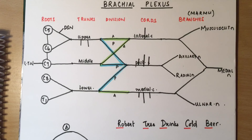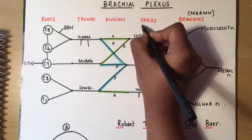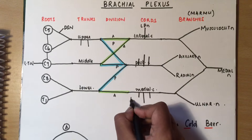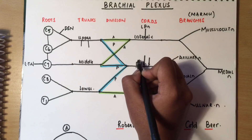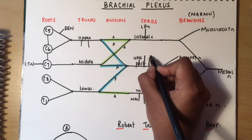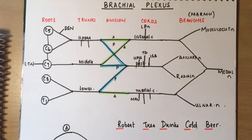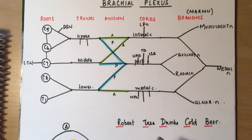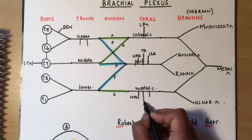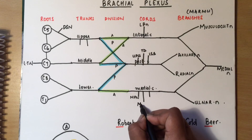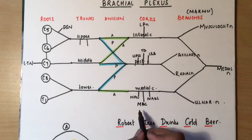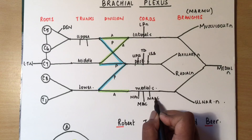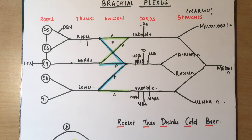The lateral cord gives rise to the lateral pectoral nerve. The medial cord gives rise to the medial pectoral nerve. The posterior cord gives three branches: the upper subscapular, lower subscapular, and thoracodorsal nerves. The medial cord also gives rise to the medial cutaneous nerve of the arm and the medial cutaneous nerve of the forearm.